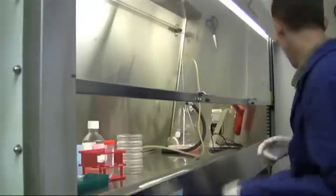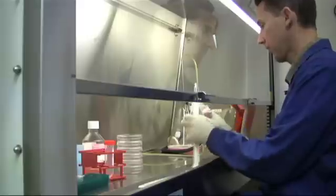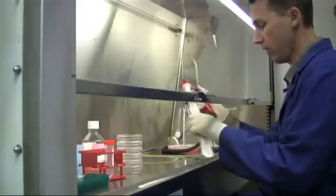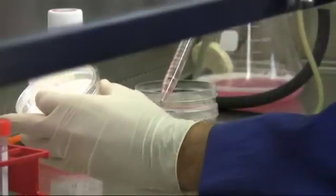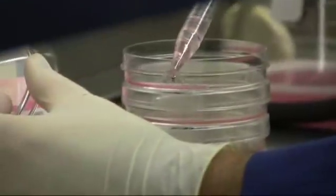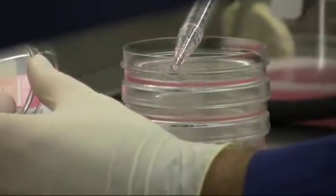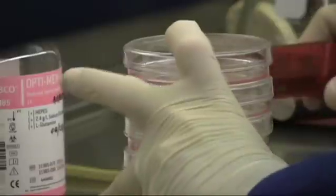I'm going to wash them with 5 mils of optimum. And that would be 30 mils total. So I add it gently to the side. Don't add it to the center of the plate, otherwise you'll dislodge your cells and end up with a big vacant spot in the middle. Give it a little swirl around.